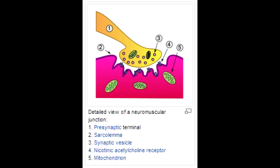Phase 2 block is when the cells are repolarized but they are still blocked. The reason for this is because the ACh receptors become available at this point but they are desensitized. The antidote for phase 2 block of succinylcholine is a cholinesterase inhibitor, such as neostigmine.